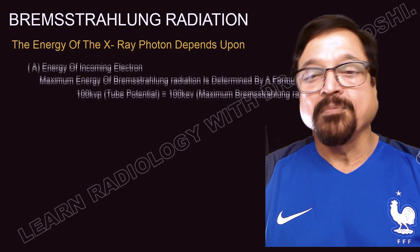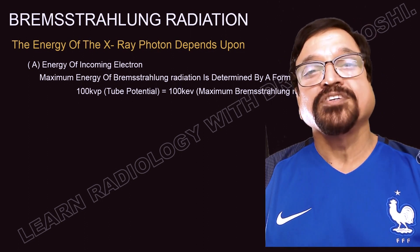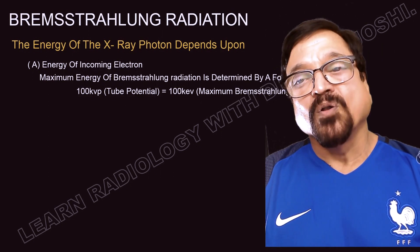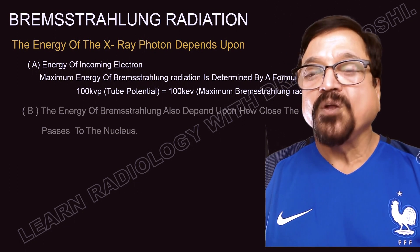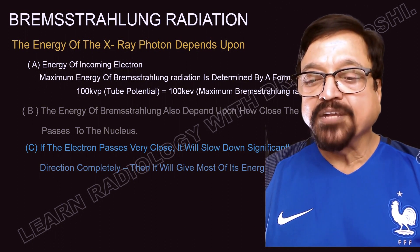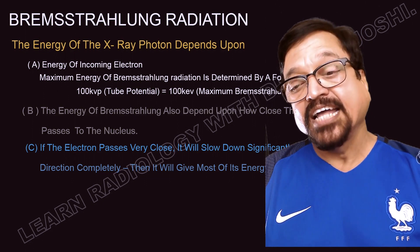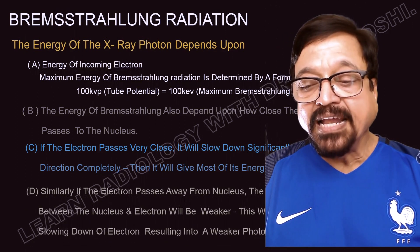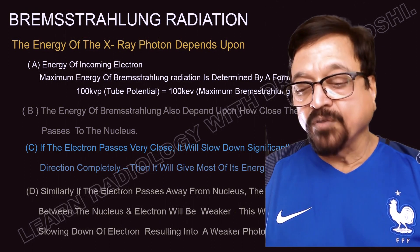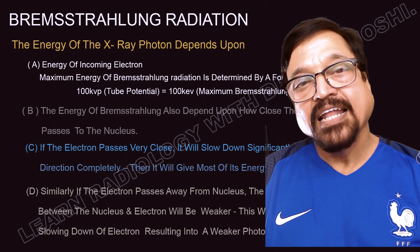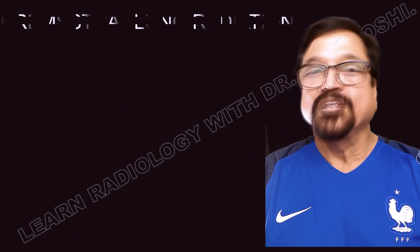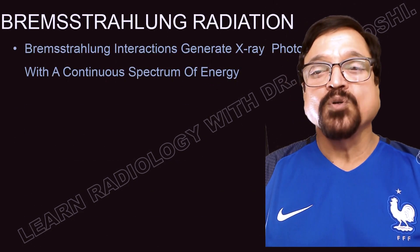The energy of the X-ray photon produced depends on: first, the energy of the incoming electron — a faster incoming electron produces a higher-energy photon. Second, the energy of Bremsstrahlung depends on how close the electron passes to the nucleus. If it totally merges with the nucleus, 100% energy conversion occurs. If it passes very close, it slows down significantly and gives off most of its energy as X-rays. If the electron passes far from the nucleus, the attraction is weaker, resulting in minimal slowing and low-energy radiation. Electrons closer to the nucleus have more energy; those farther away have less.